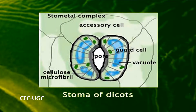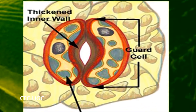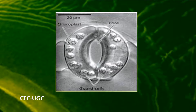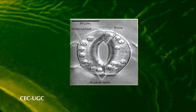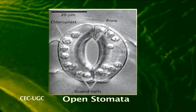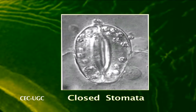Typical stomata of dicots consist of two kidney-shaped guard cells joined at their ends. The concavo-convex curvature of the two guard cells is variable and causes the stomatal pore to open and close.